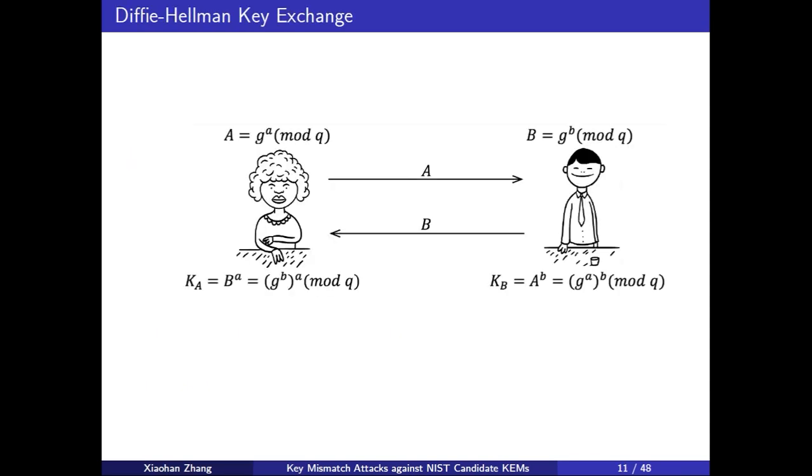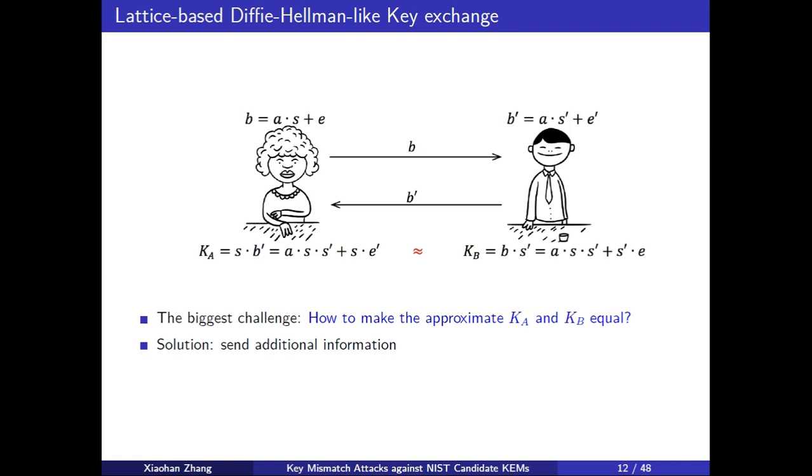Before it, we recall the Diffie-Hellman key exchange protocol firstly. The two parties in the communication jointly generate a single session key, and KA is equal to KB. The structure is symmetric. But on the lattice-based DH-like key exchange, the key breakthrough in using an encryption mechanism, which means that one party needs to send additional information to help the other party to agree on the same session key.